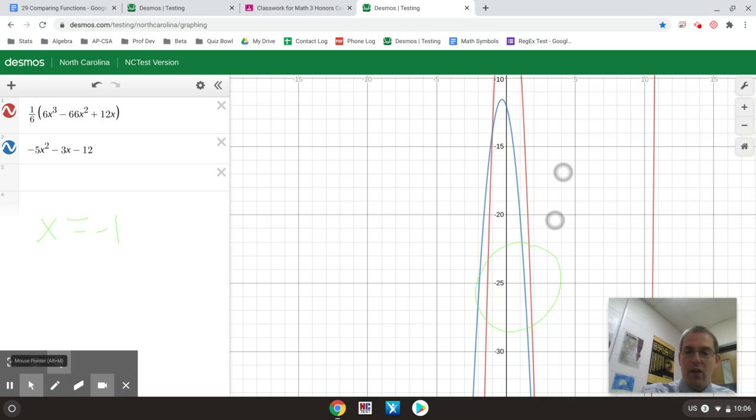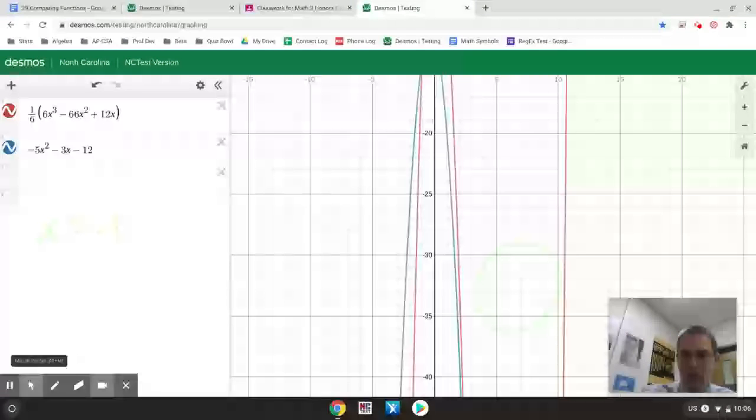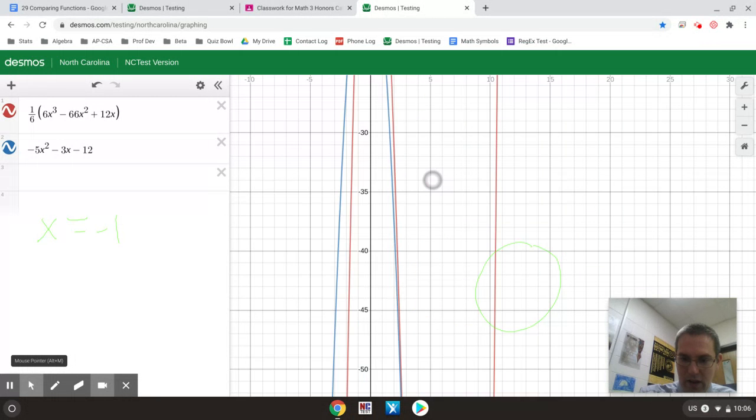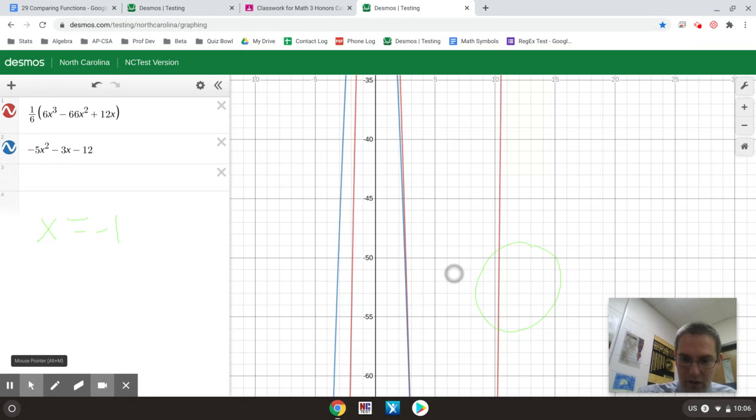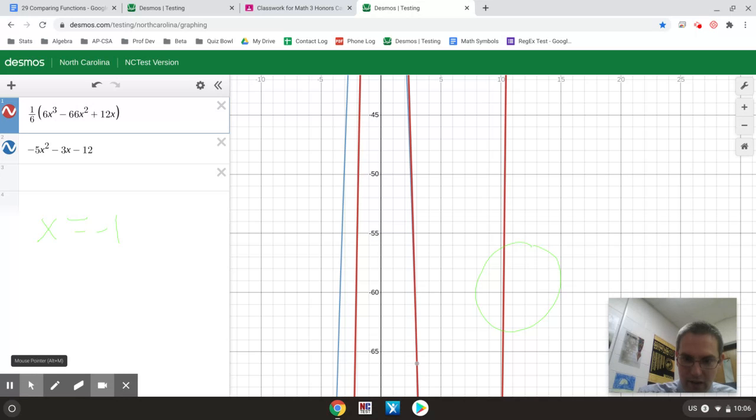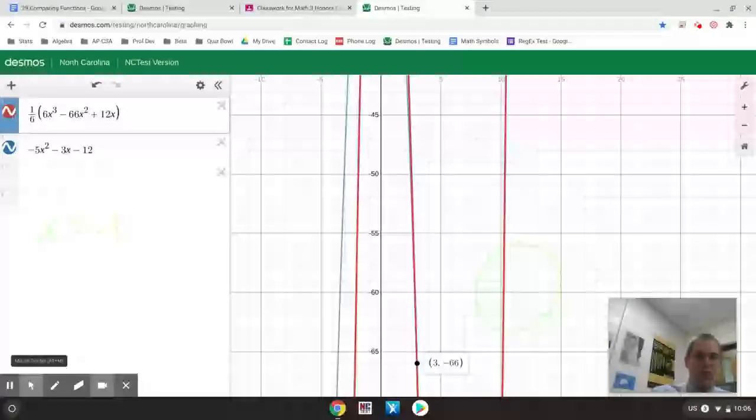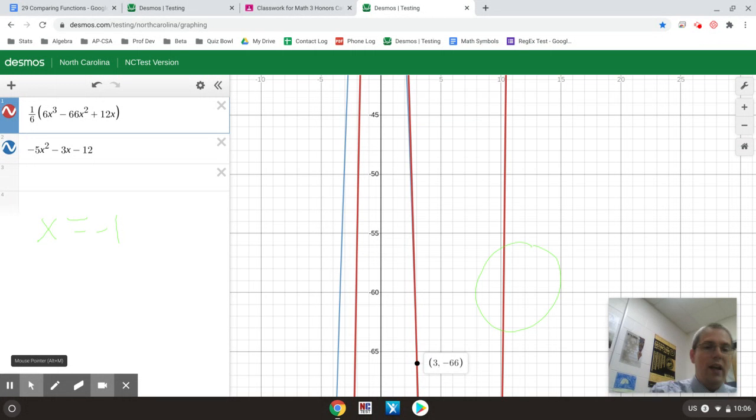So as I continue to scroll and just drag, you can see they are getting really close. So it does look like they actually touch again. So let's see. If I click the graph, it does give me another intersection of 3, negative 66.